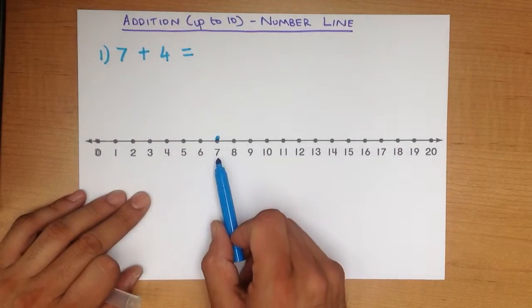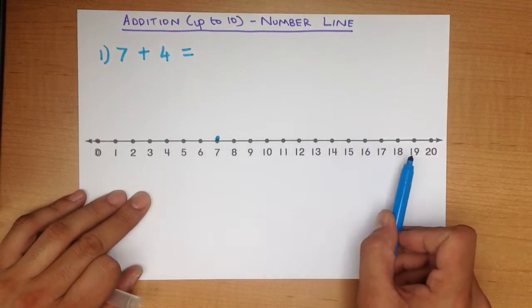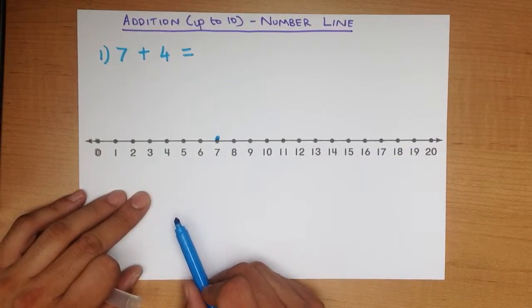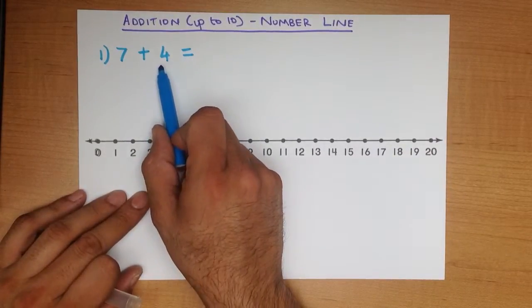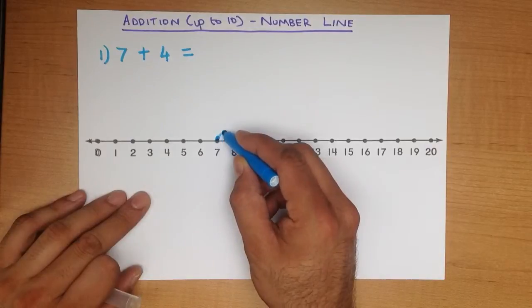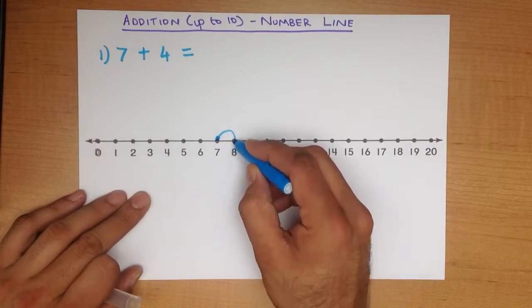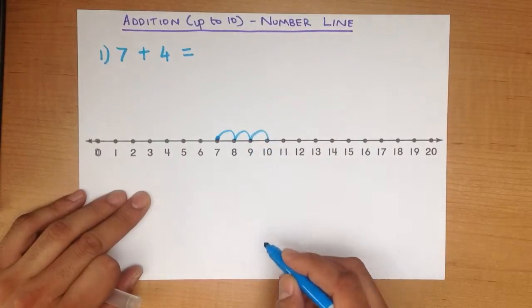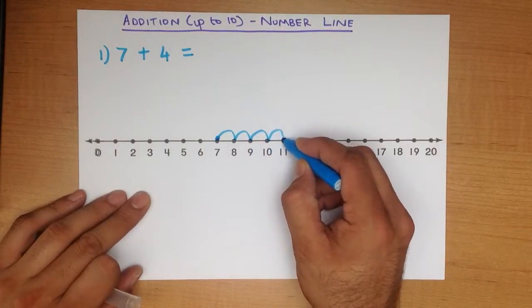7 plus, so we start at 7. We're going in this direction. How many jumps forward are we going to make? 4. So, let's work through this. We're at 7 and we're going to go jumping 1, 2, 3, 4.